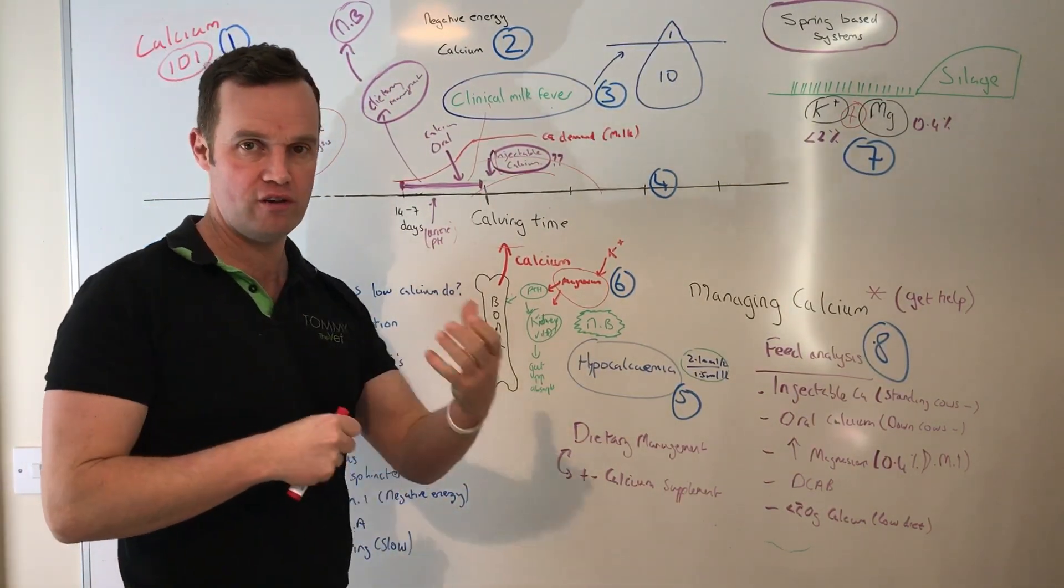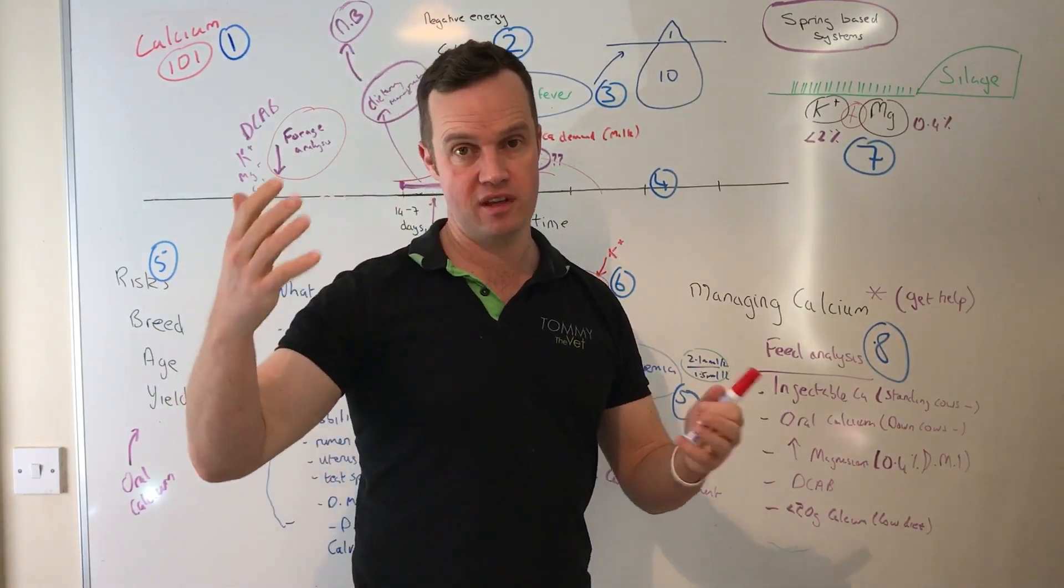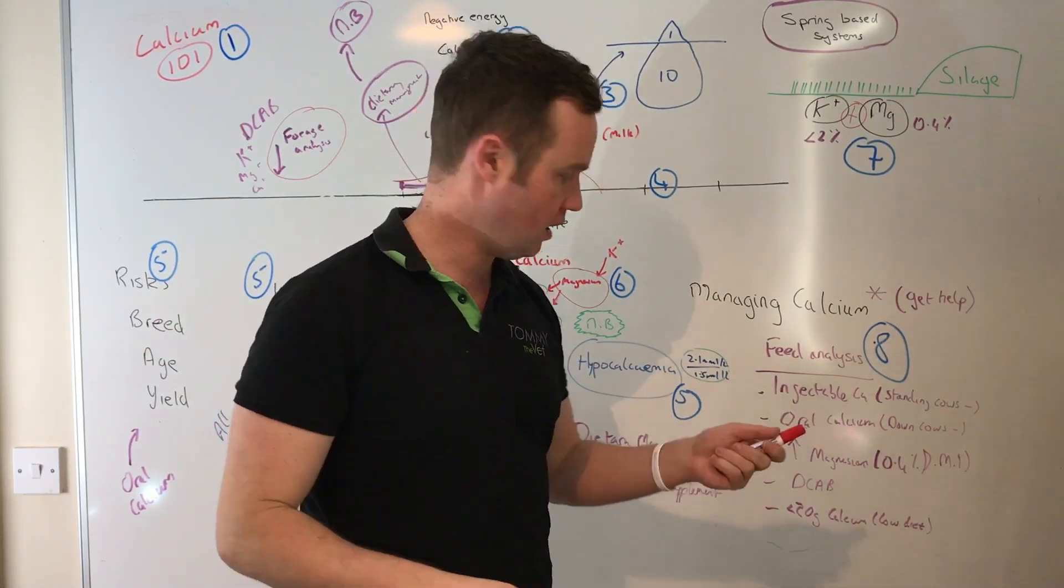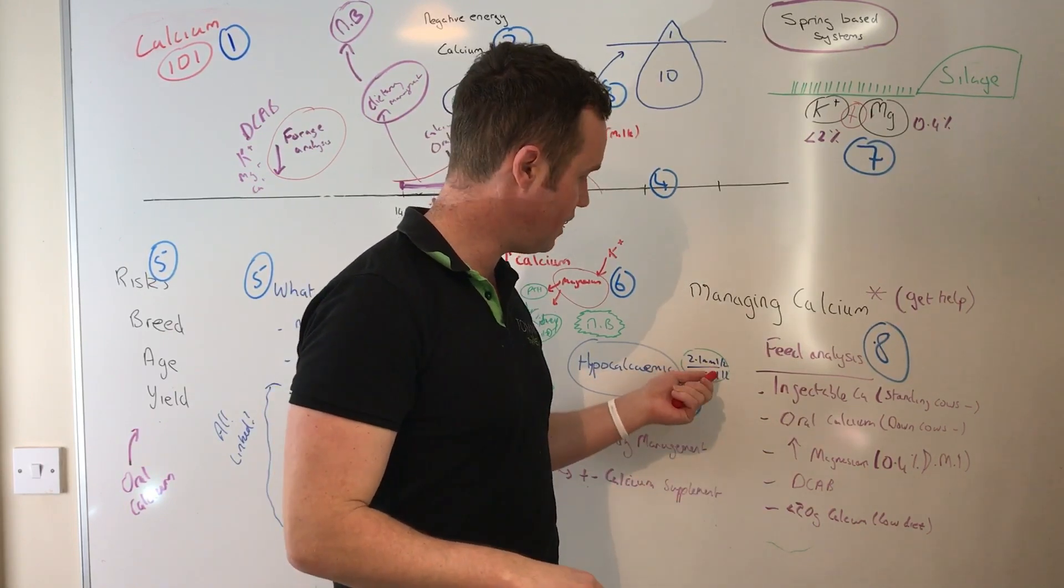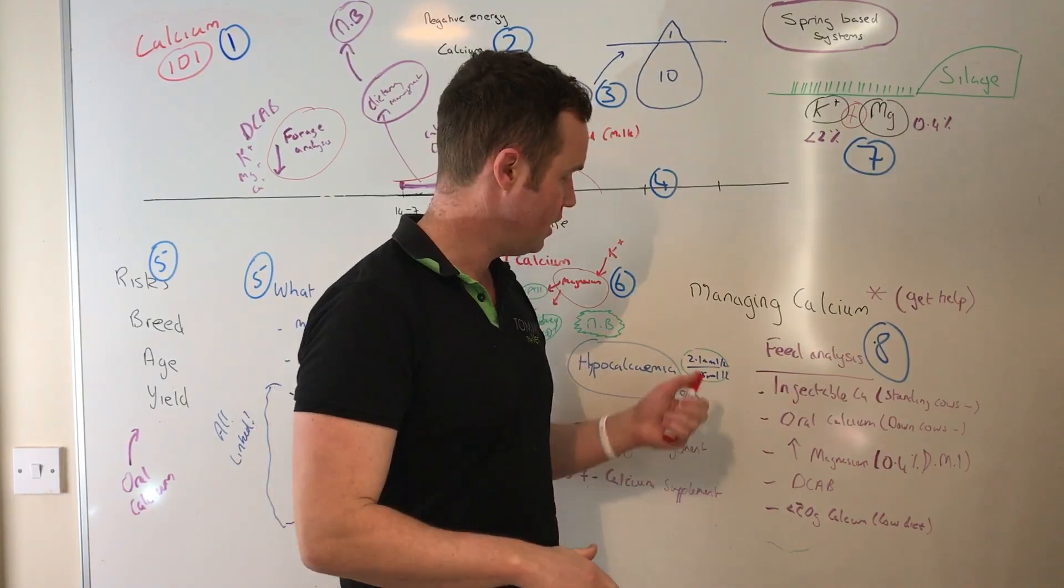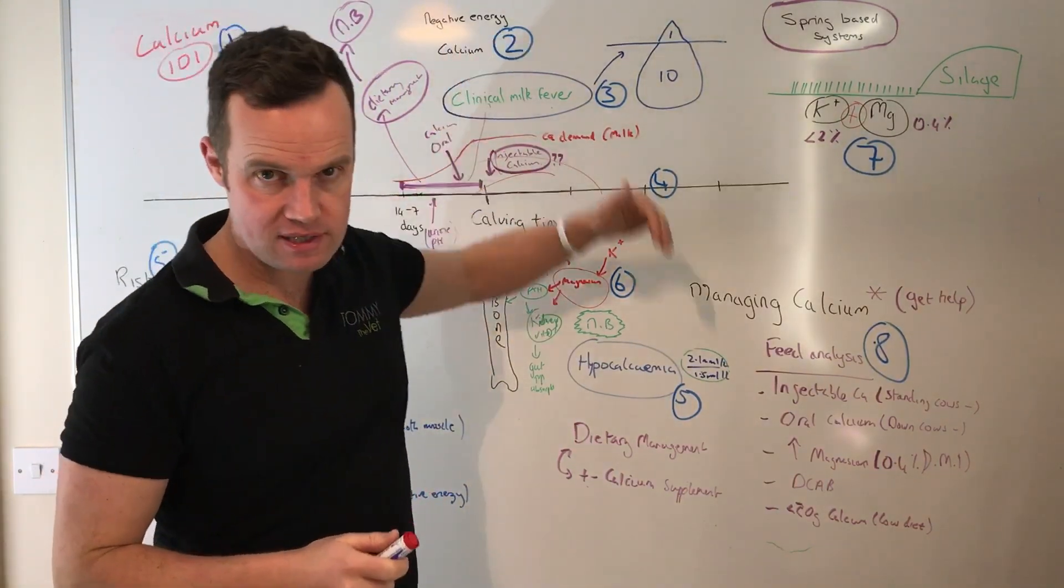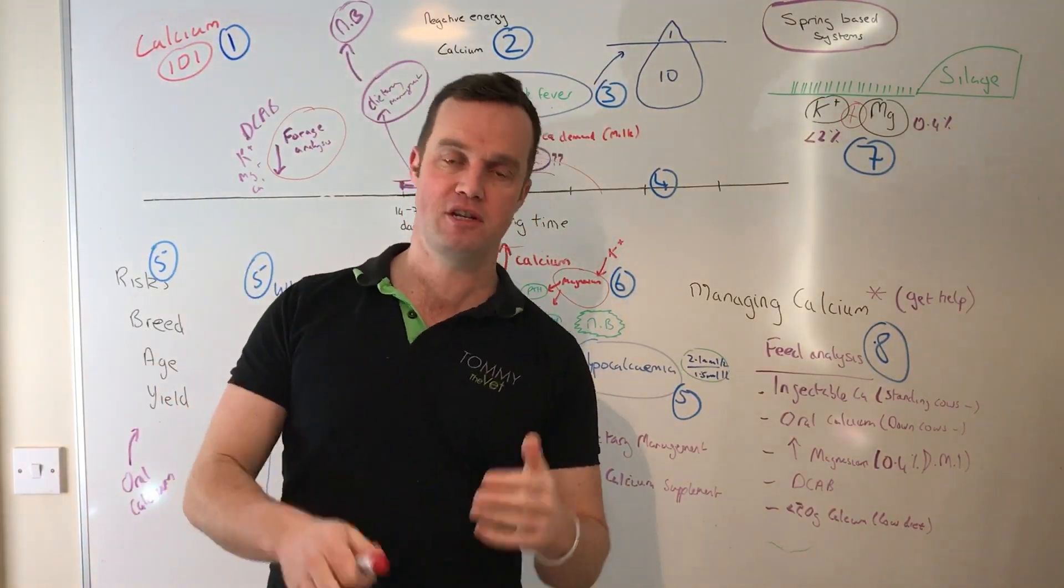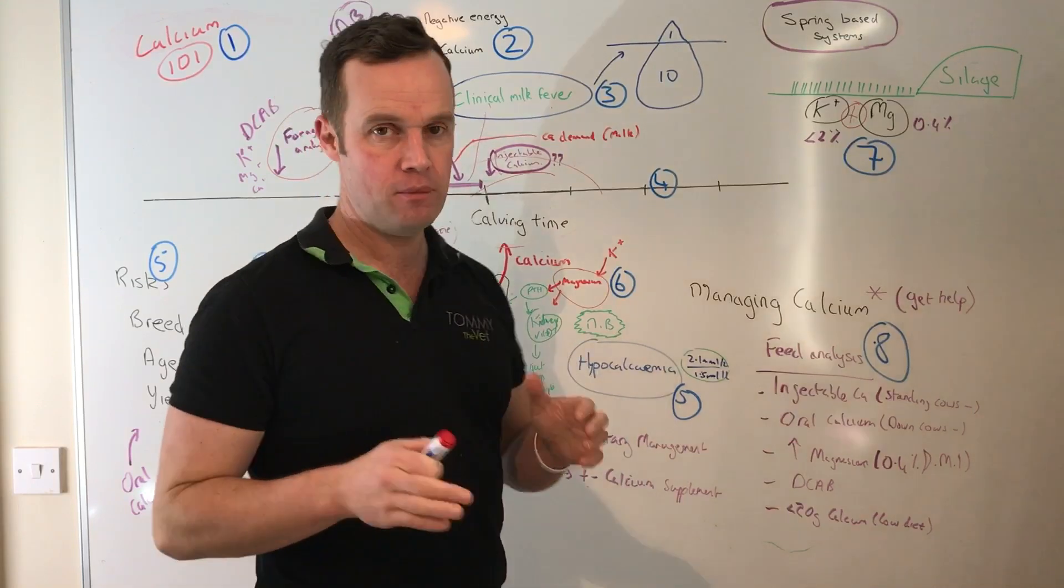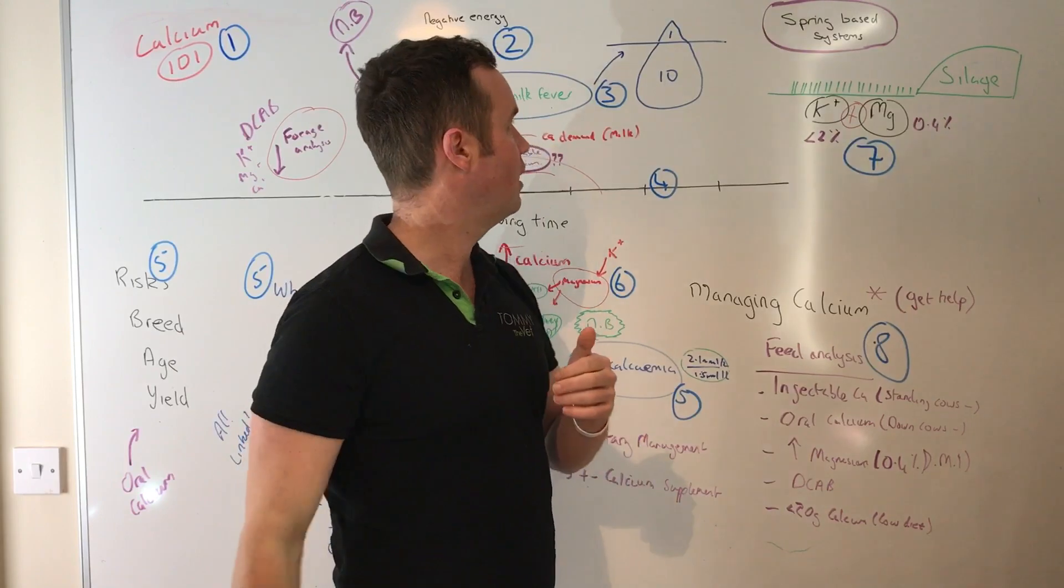Really negative energy, body condition, protein, all that energy management is really critical around calving. But the next big one for me and the next big thing to get right for the cow is calcium, particularly in spring-based systems, in grass-based systems. I find calcium can be a problem. So we all know about calcium or you've heard of calcium in relation to clinical milk fever.